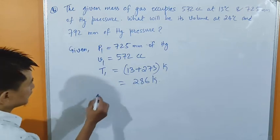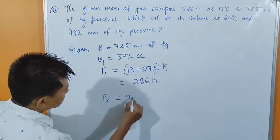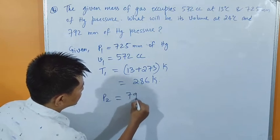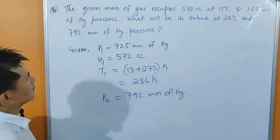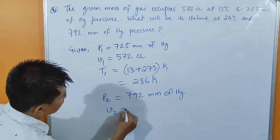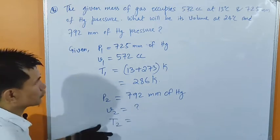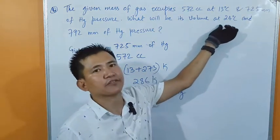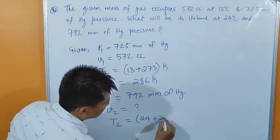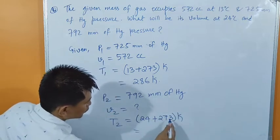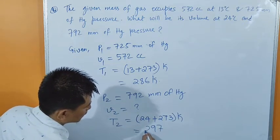These are the initial conditions given. P2 is given to us: P2 is 792 mm of Hg. V2 has not been given to us — V2 has been asked. And T2, writing in absolute scale: the temperature given in the question is in Celsius scale, so let me convert 24 degrees Celsius to absolute scale. 24 plus 273 gives 297 Kelvin.